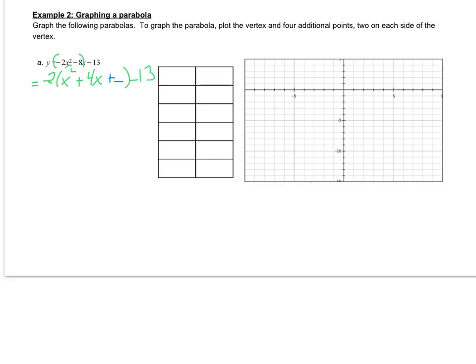And then I need to remember that I have to add that opposite out here. So then we have to figure out what number we're adding in there. That number we're going to take the 4, divide it by 2, and square it, and that number is going to go there.